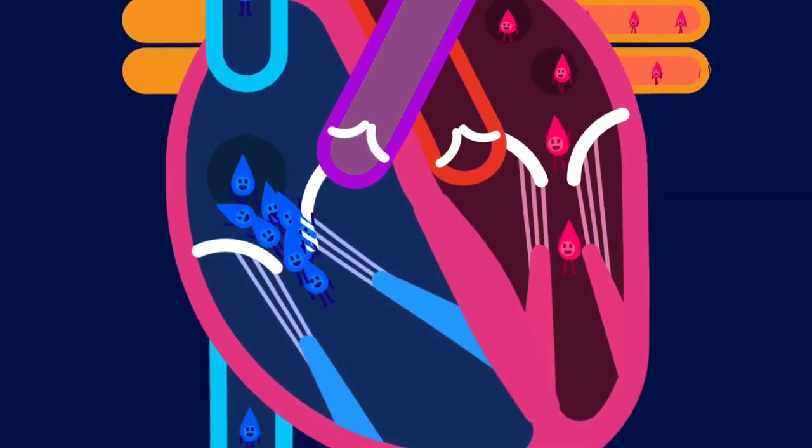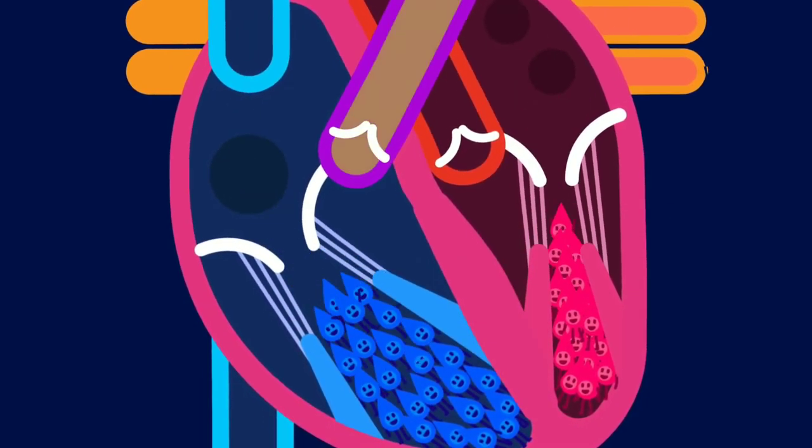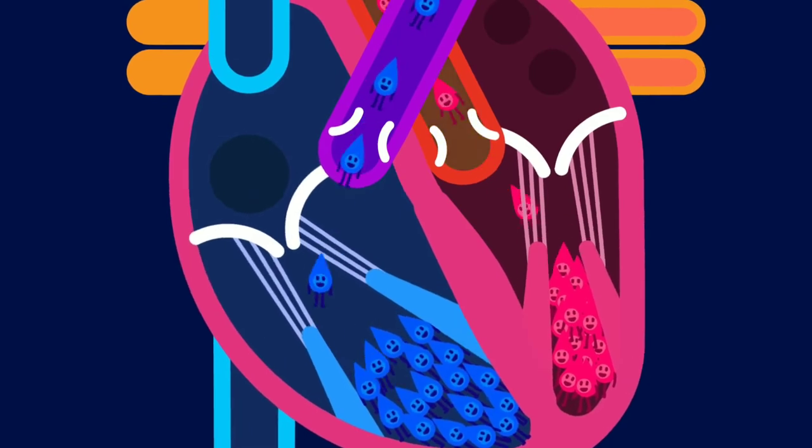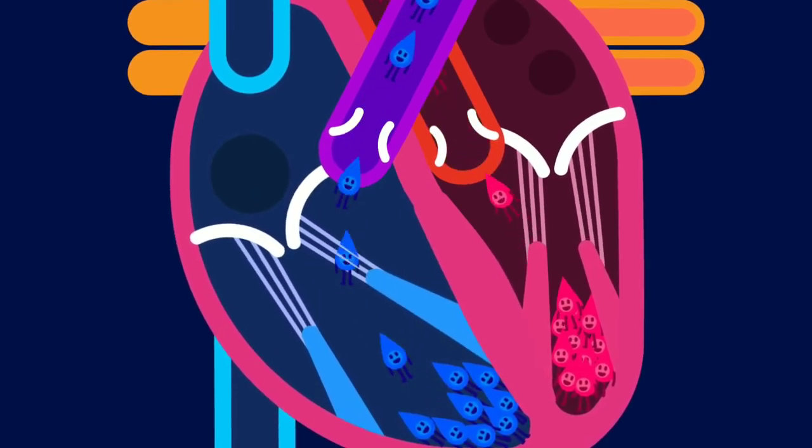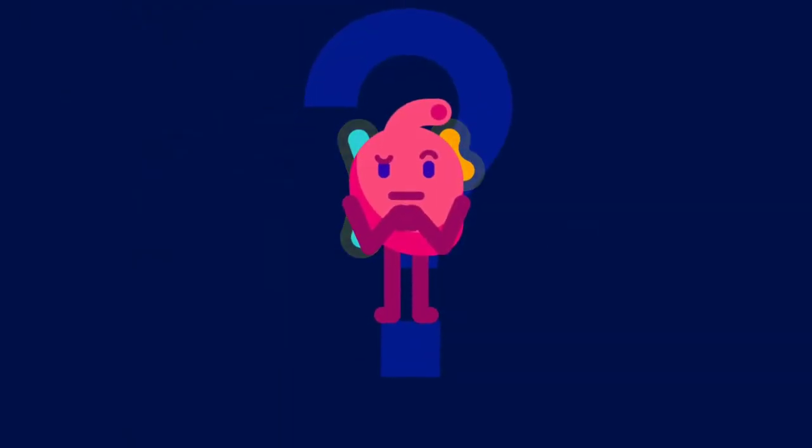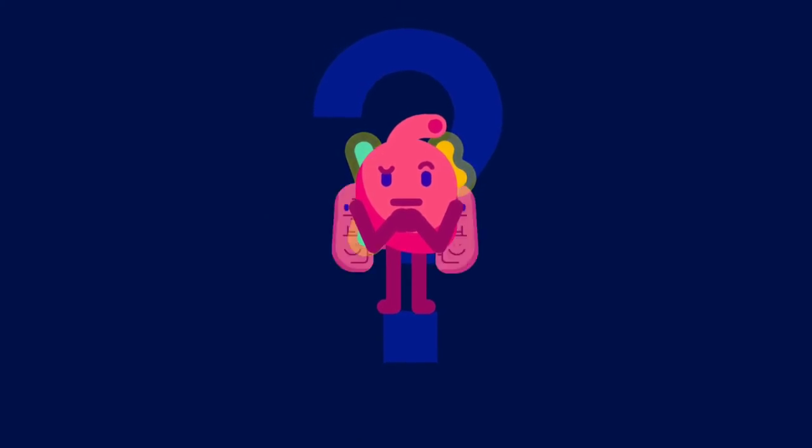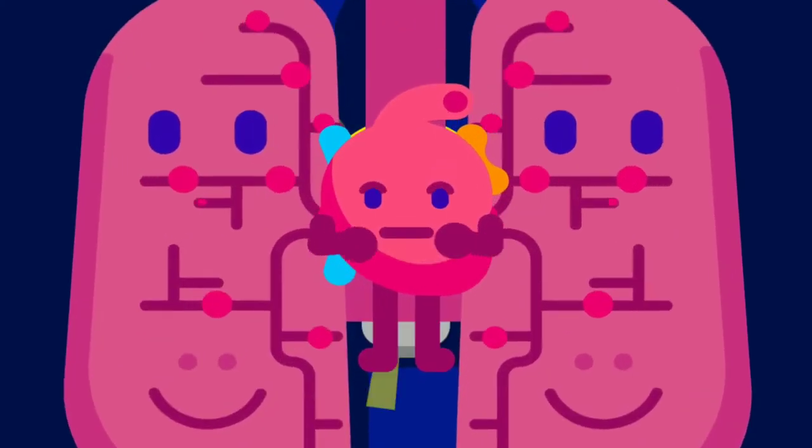The pulmonary artery carries deoxygenated blood to the lungs while the aorta carries oxygenated blood to the body. Can you recall from the previous lesson what the pulmonary vein does? Yes, it carries oxygenated blood from the lungs to the heart.